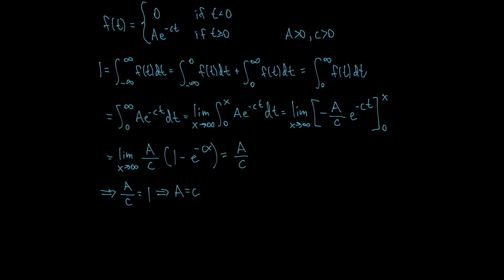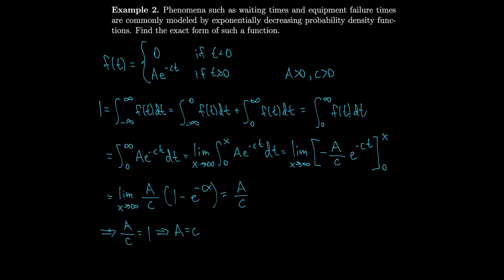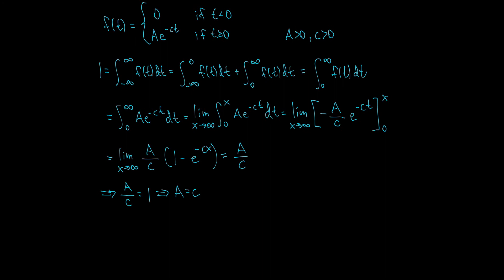So now we have a better form for our exponentially decreasing probability density function: f of t equals 0 if t is negative, and f of t equals c·e^(−ct) if t is positive.